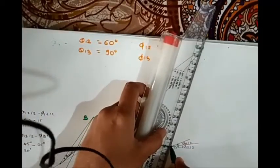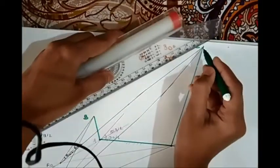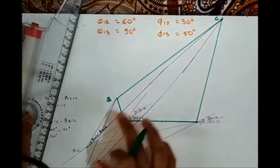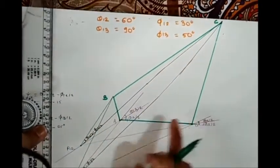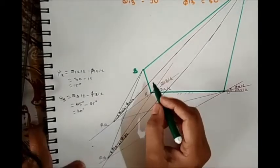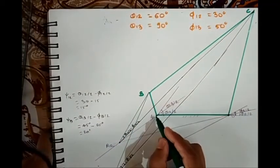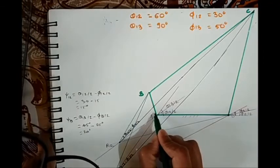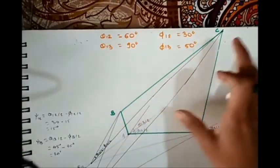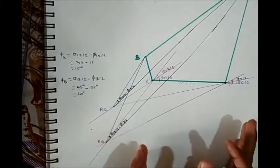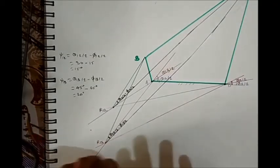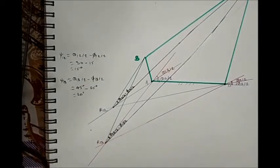Join C with D and C with B. Here we have the 4-bar mechanism ABCD synthesized using the relative pole method. The initial position of the input link is not given, so if you change this angle or the length of the input link, the position of C will change accordingly. This is the procedure by which we are able to synthesize the mechanism using the relative pole method. I hope you get the concept. Thank you.